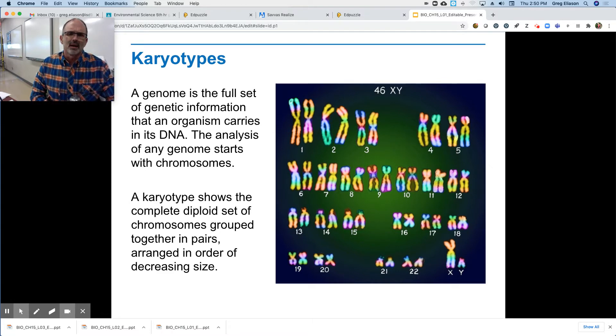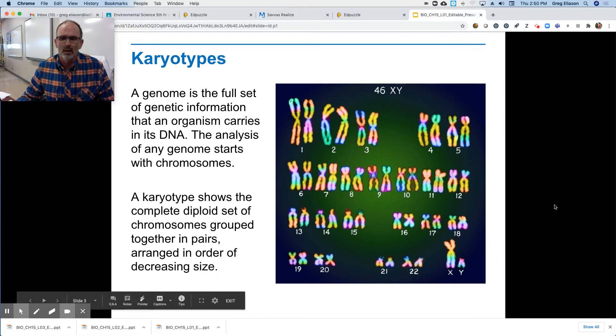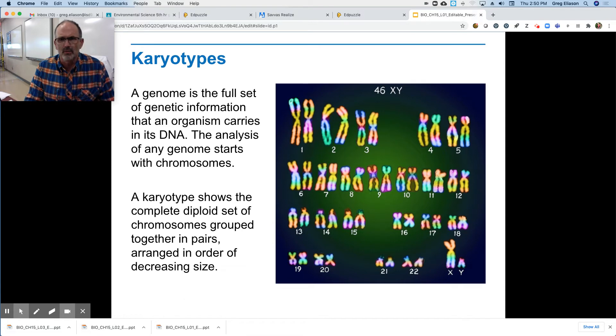a specific color, and then arrange them in order of decreasing size. And so number one was the biggest and number 22 was the smallest. And X and Y are the 23rd pair, okay? So we have 23 pairs, 46 individual chromosomes.